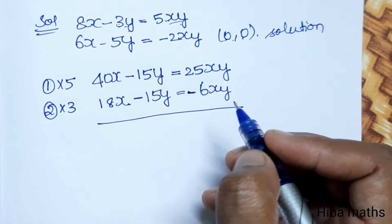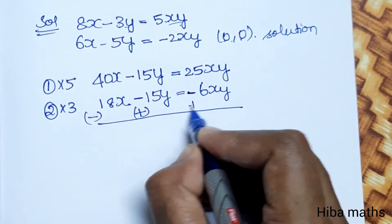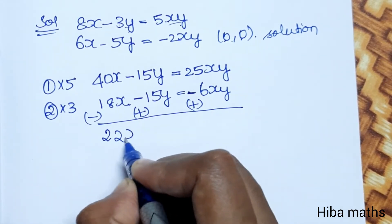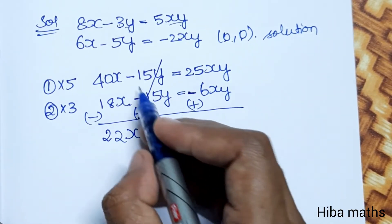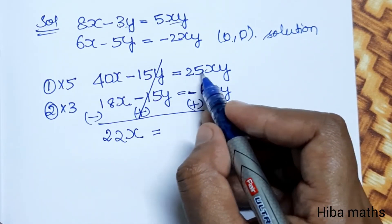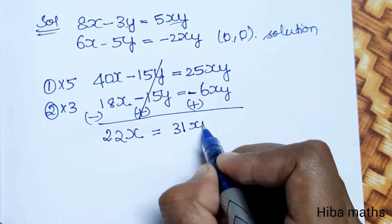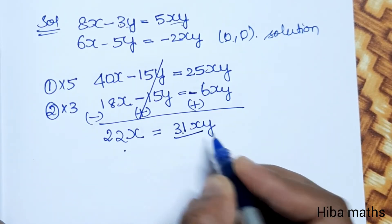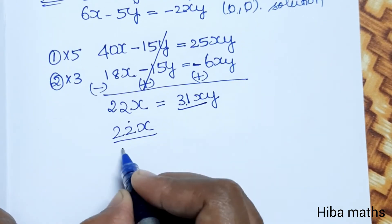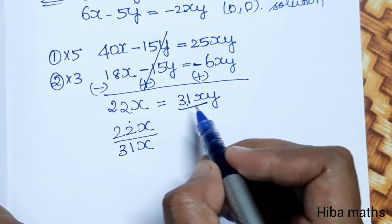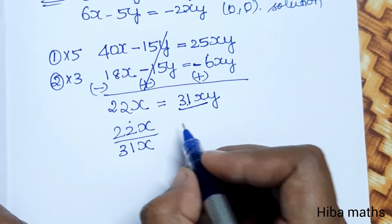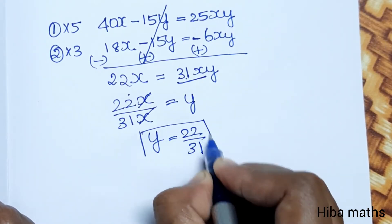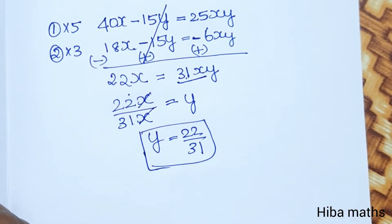After applying elimination, we get: 40 minus 18 gives 22x, and combining terms we get 31. So 22x divided by 31x simplifies — the x cancels — giving y is equal to 22 by 31.